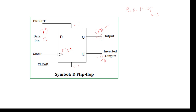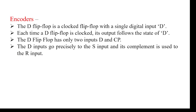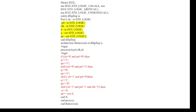So we can see here we need to mention that is the preset input, clock input, and D is the data input. The outputs are Q and QN. These are the input and outputs — you can see the yellow color we need to mention.